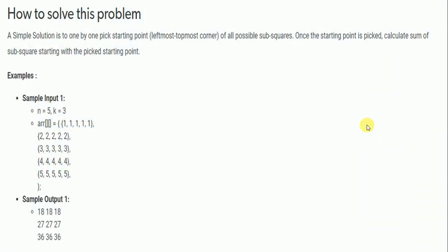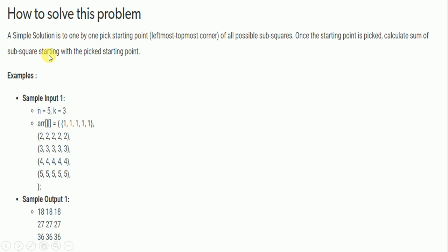A simple solution is to, one by one, pick the starting point — the leftmost topmost corner — of all possible sub-squares. Once the starting point is picked, calculate the sum of the sub-square starting with that starting point.